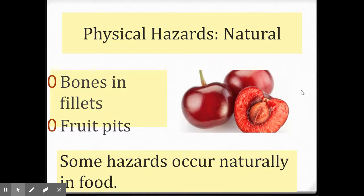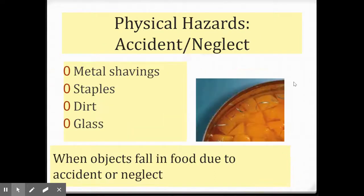There are also physical hazards. These are things you can actually see. There are two types of physical hazards. Natural ones occur in the food but we don't really want to eat them, and they probably are not going to hurt you — like bones left in fish or a little bit of a fruit pit. If you bite into something hard that was part of the food but not supposed to be there, you're probably going to be okay.